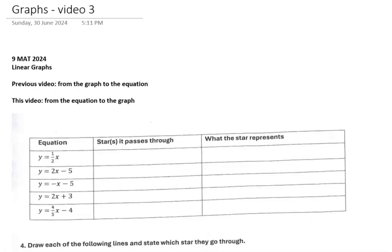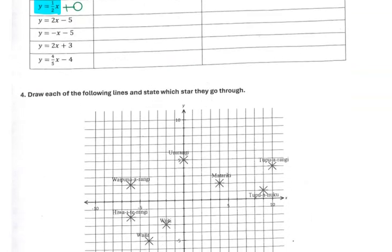What we have to do when we're doing from the equation to the graph is we need to find the gradient and the y-intercept. So we're basically doing the opposite of what we did in the video before this one. For the first one we've got y equals a half x. We can see in there that the y-intercept is plus zero, so there's no y-intercept and the gradient of one half means I'm going out two and then up one, out two and then up one. So the first thing to do here is to find the y-intercept and work from there using the gradient.